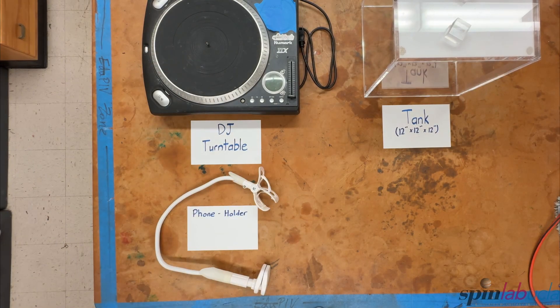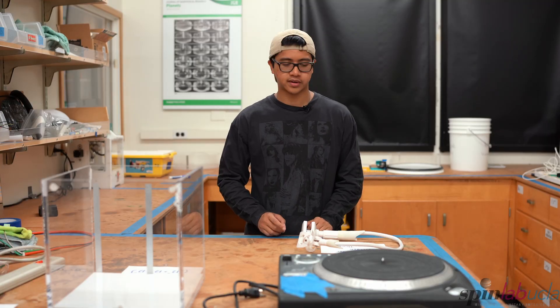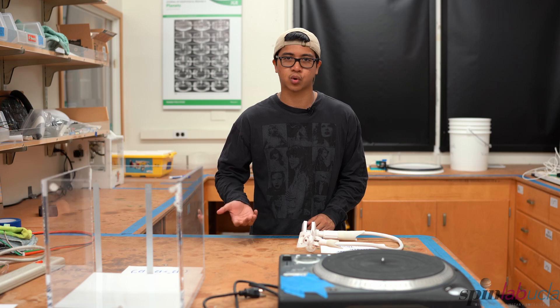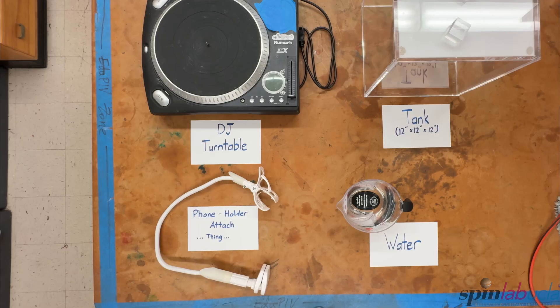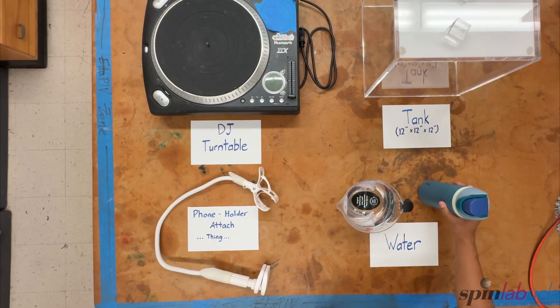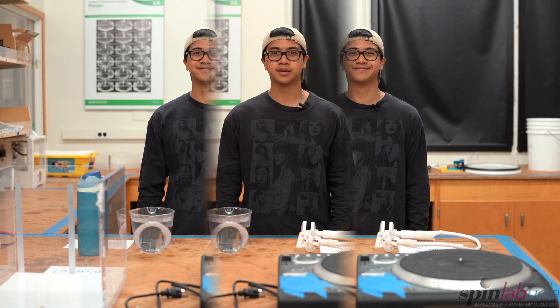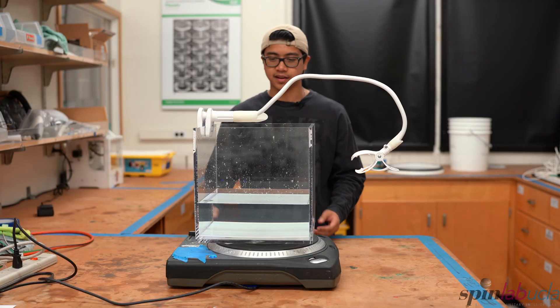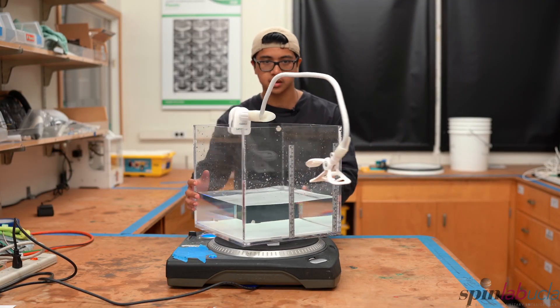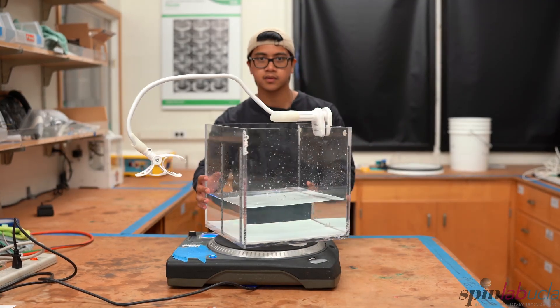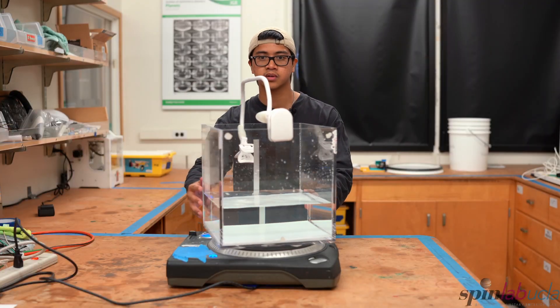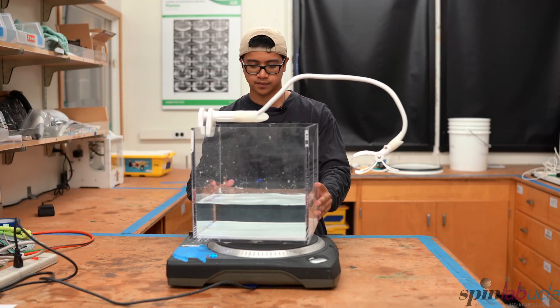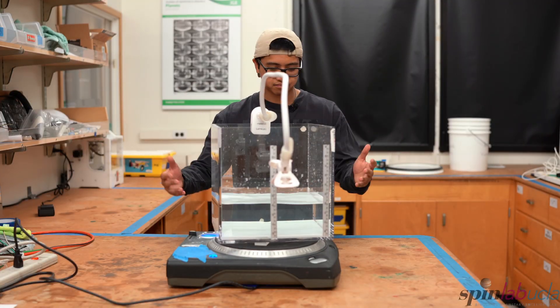Next, we have our phone holder attachment, which you use to attach your phone or any recording device onto the tank while it's spinning. Lastly, we have our water in any form that you like. Let's put it all together. Now that we have our complete setup, here's a look at it from every view.